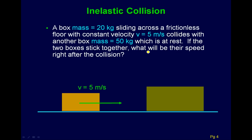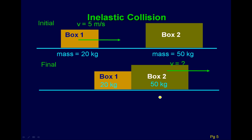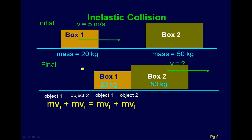Let's look at a classic example of an inelastic collision. We have two boxes: box one with a mass of 20 kilograms moving at 5 meters per second toward box two, which is initially at rest. When they collide, they stick together. We want to figure out their speed right after the collision. We conserve momentum since this is a collision and the surface is frictionless.